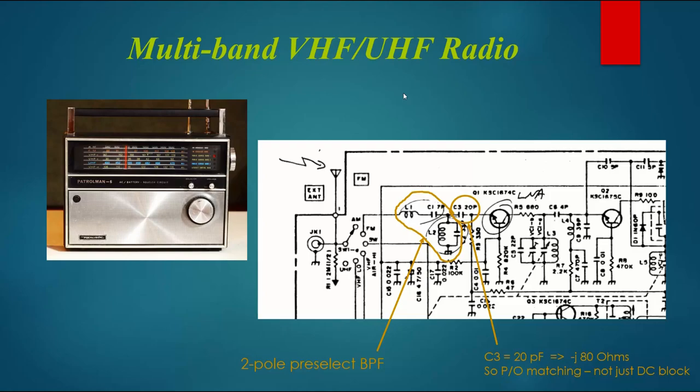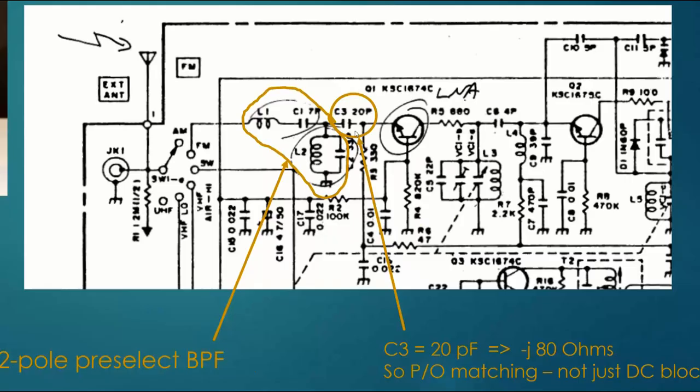Moving up in frequency, this is an example of a VHF-UHF radio. This one is multiband, so the antenna can be switched to different circuits. Assume the switch is moved to the FM position so the antenna comes in to L1. L1 and C1 are clearly a series LC resonator or bandpass filter. Then L2 and this capacitor form a parallel bandpass filter. The combination of series LC and shunt LC form a two-pole bandpass filter with better selectivity. There is C3 here, a DC block for biasing, but it's 20 picofarads. I believe that's part of input matching to this common base amplifier. C3 is essentially the series arm of an L-type matching network. The inductor is folded into L2 and shared with the bandpass filter here.